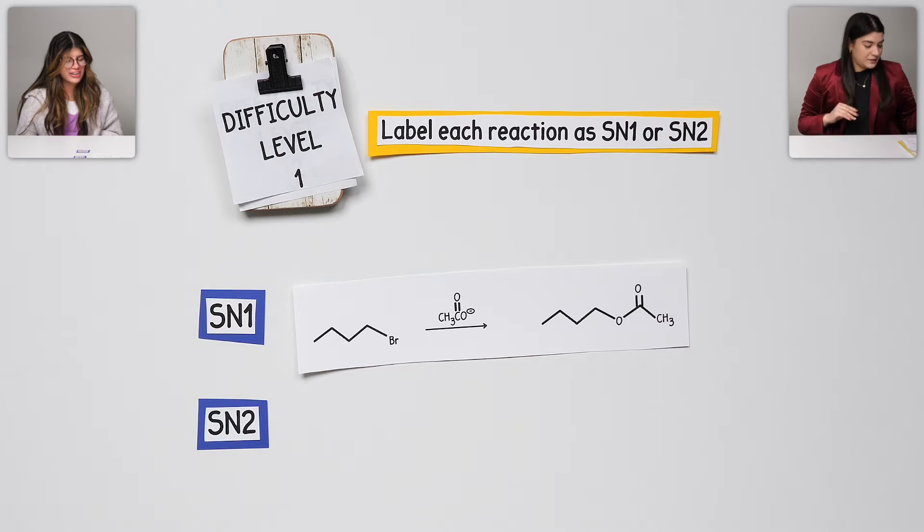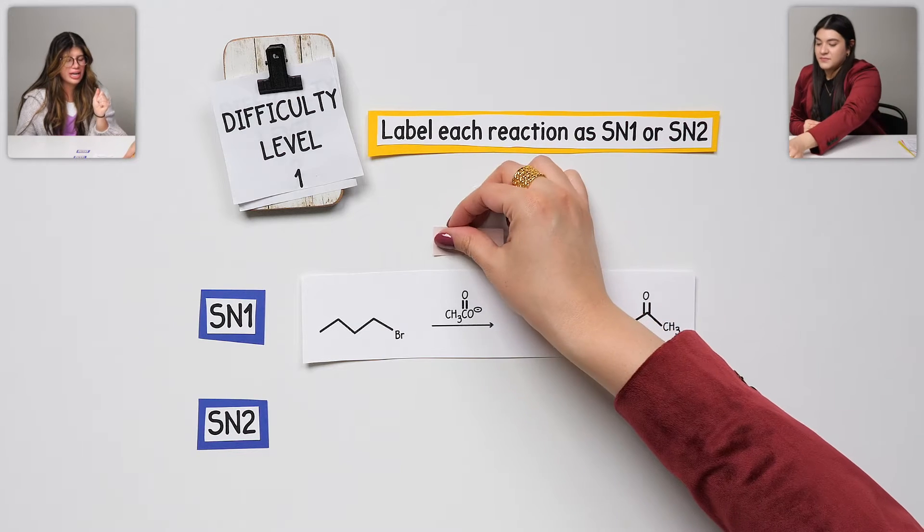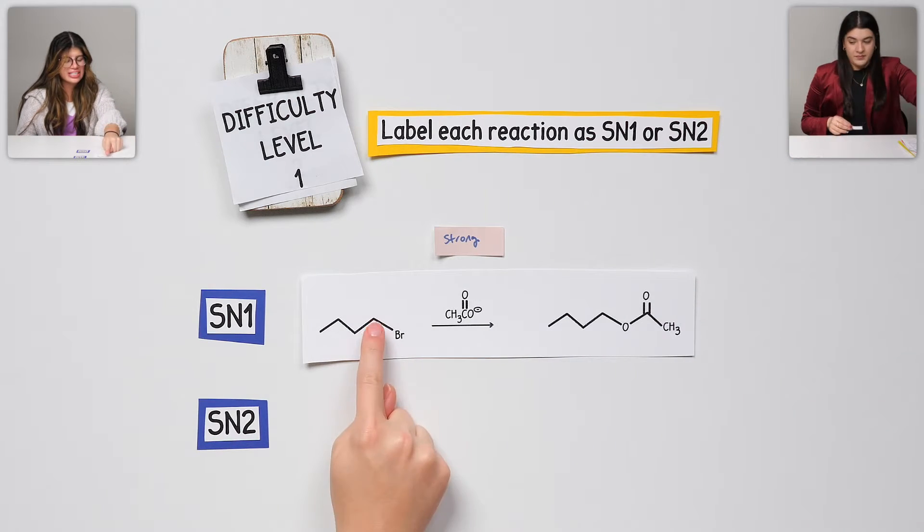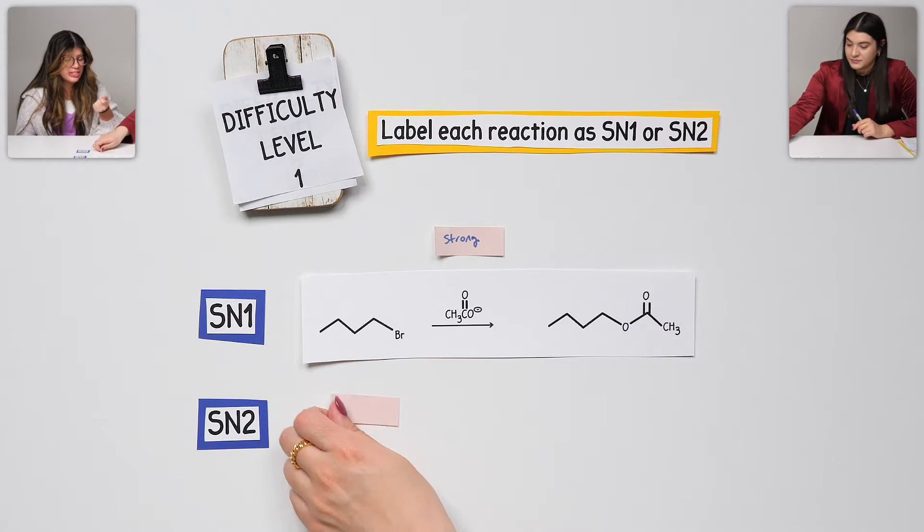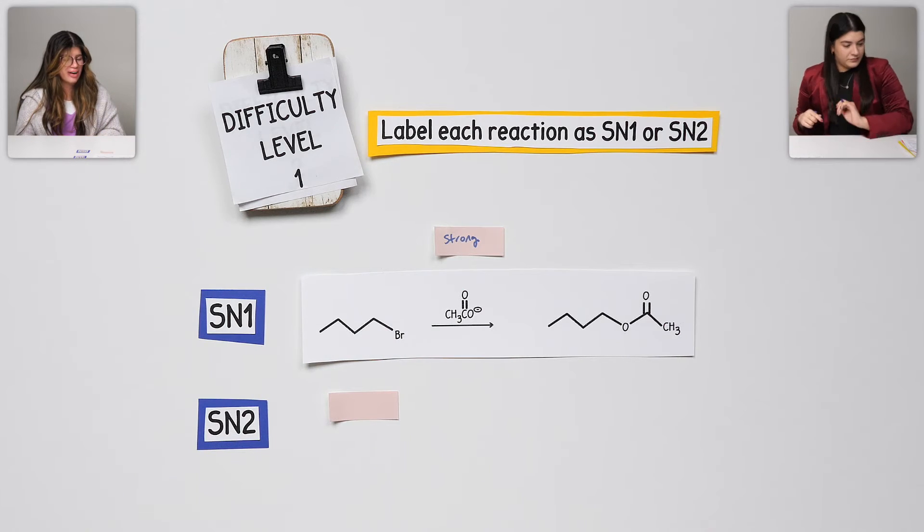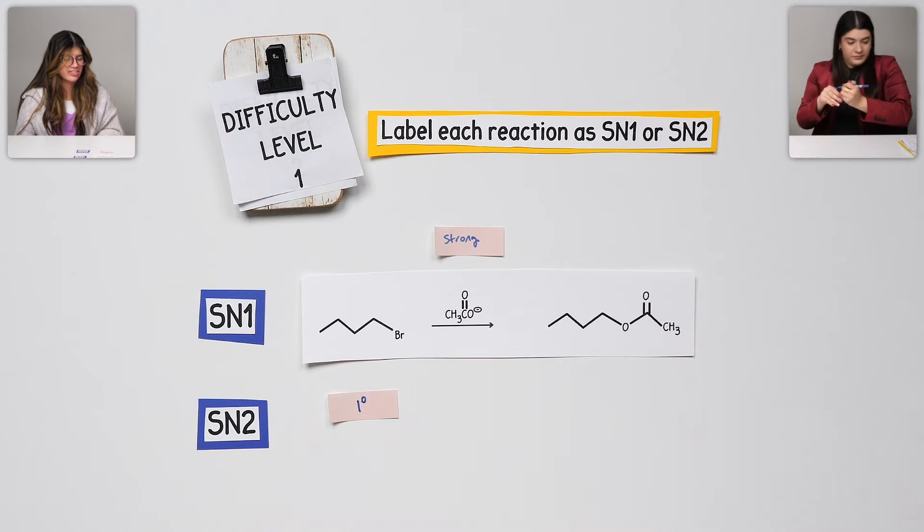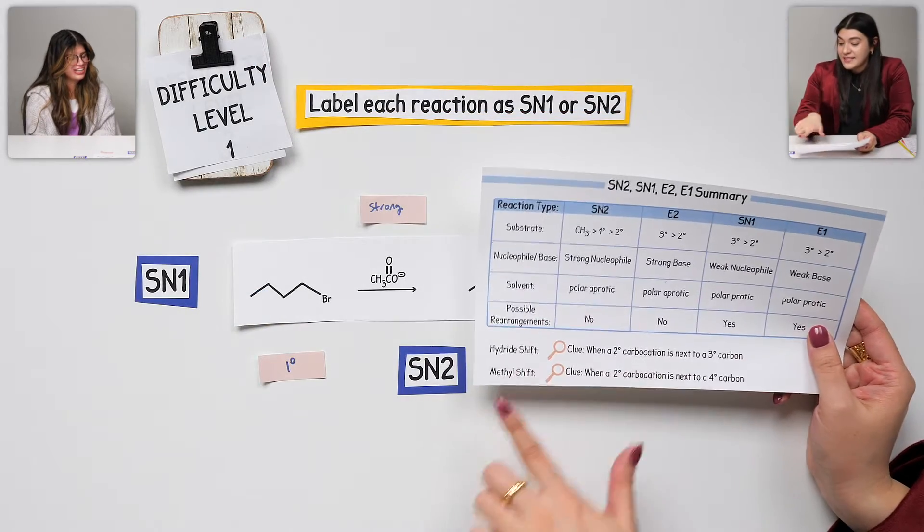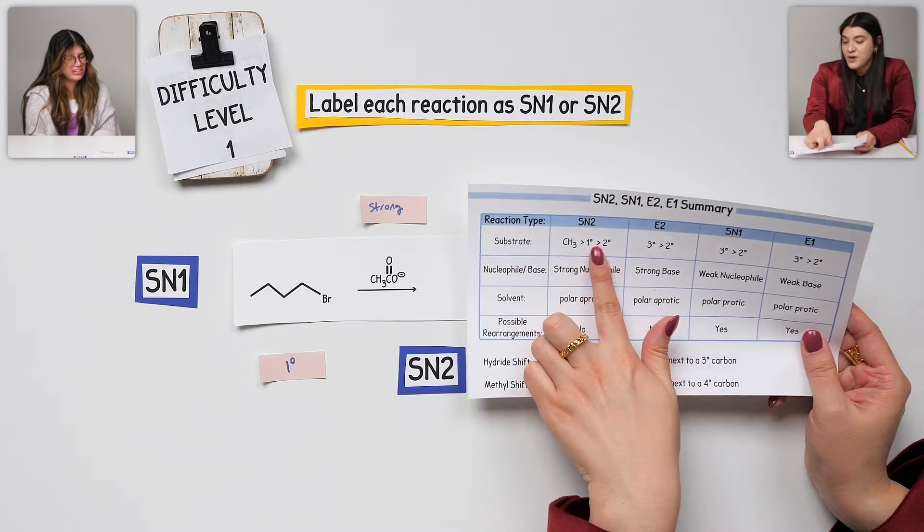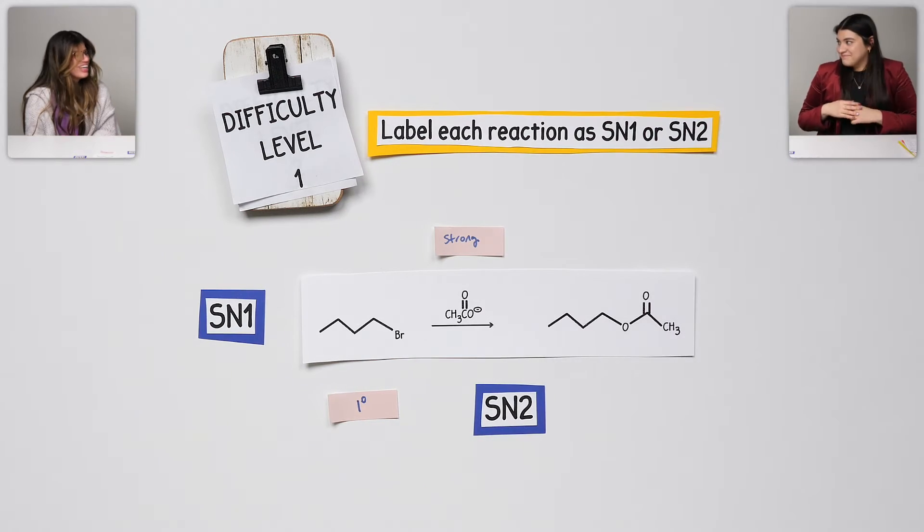Let's keep going. Go for it. What do we think? I'm looking at it. It's got a charge, so I know it's a strong nucleophile. Good. And then this alkyl halide is primary. So I know it will have to be, once again, SN2. Yep.